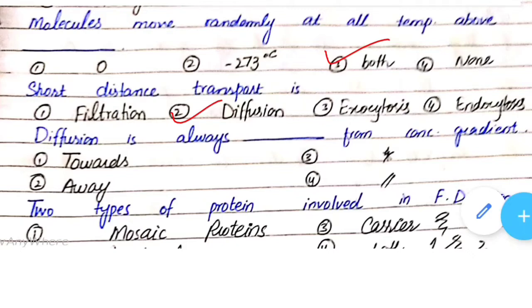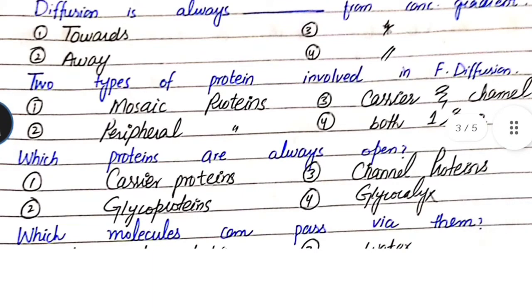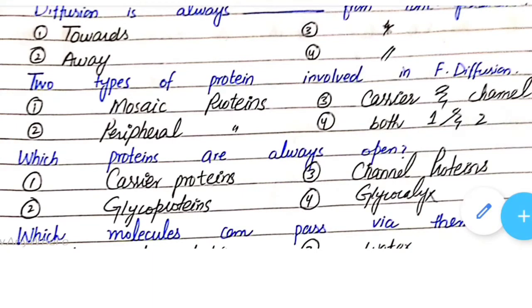Diffusion is always towards or away from the concentration gradient? Diffusion is always towards the concentration gradient. Two types of proteins involved in facilitated diffusion: option one - mosaic proteins, option two - peripheral proteins, option three - channel and carrier proteins, option four - both one and two.